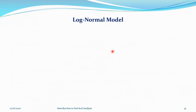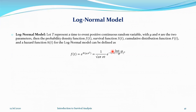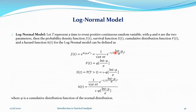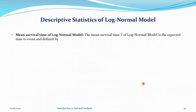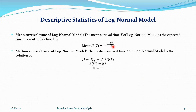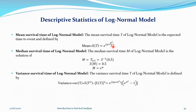We have another useful model: the log-normal model. The probability density function of the log-normal distribution, the distribution function, survival function, hazard function, and phi — the cumulative distribution function of a normal distribution — are all defined accordingly. The mean is the expected value, e^(μ + σ²/2). The median has a specific expression, and the variance has its own formula.